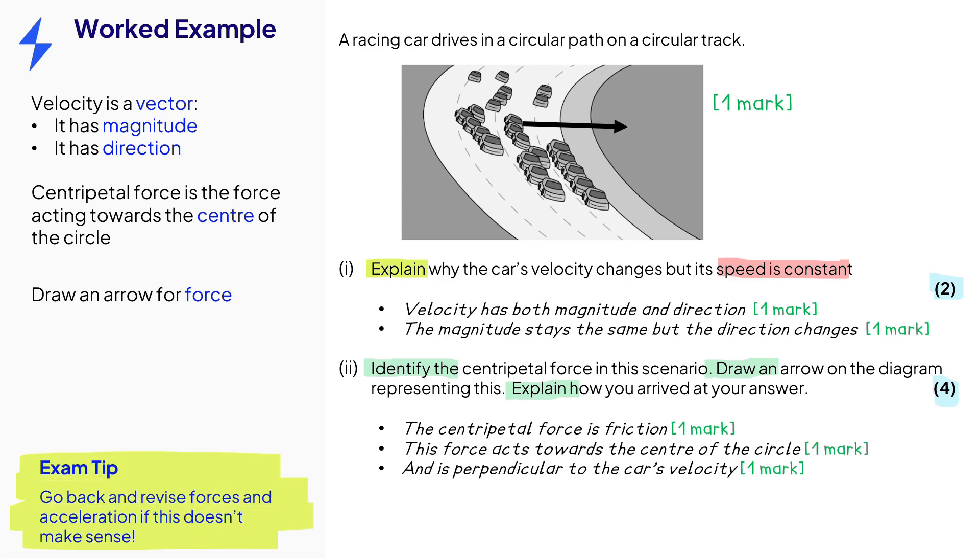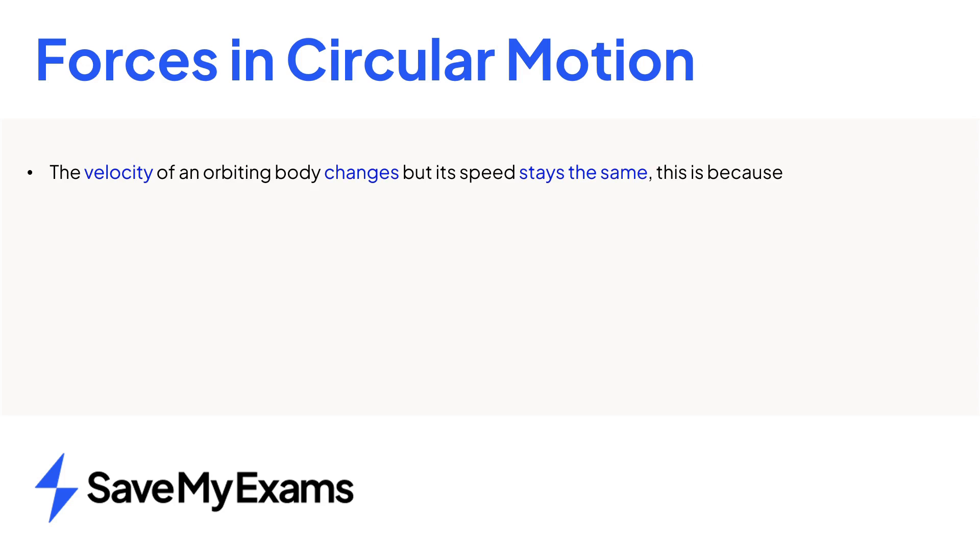This topic builds on Newton's laws, so go back and revise them if this all feels like it's a bit much. In a circular path, velocity changes while speed remains constant. This is caused by an ever-changing direction of velocity, at a constant magnitude.